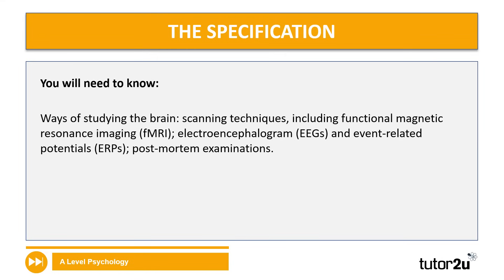When it refers to ways of studying the brain on your specification, what we're talking about specifically are the different methods that investigators will use to study and learn about the brain. So scanning techniques such as fMRI scans, electroencephalogram to look at brain waves, event-related potentials, and post-mortem examinations. It's a very large topic in biopsychology but it will give you some good links to other parts of biopsychology as well. In this session the two we're going to focus on are EEGs and post-mortems.